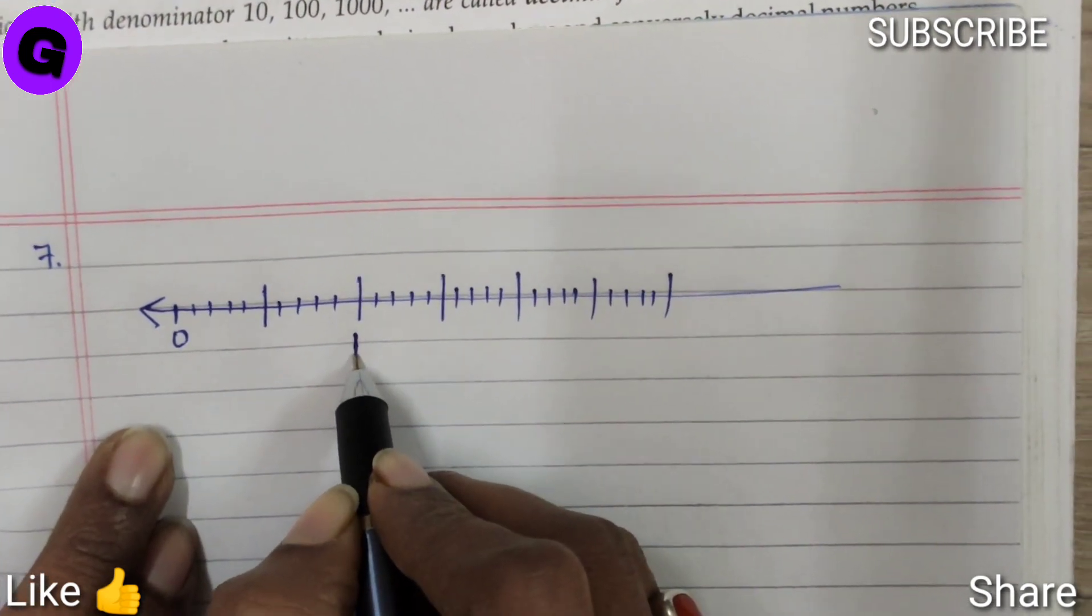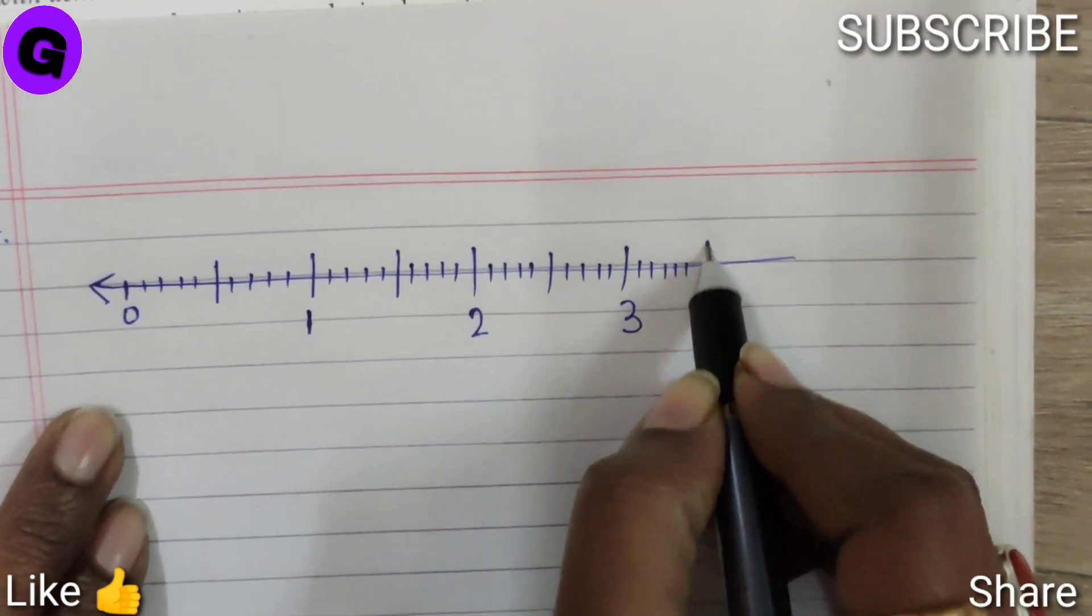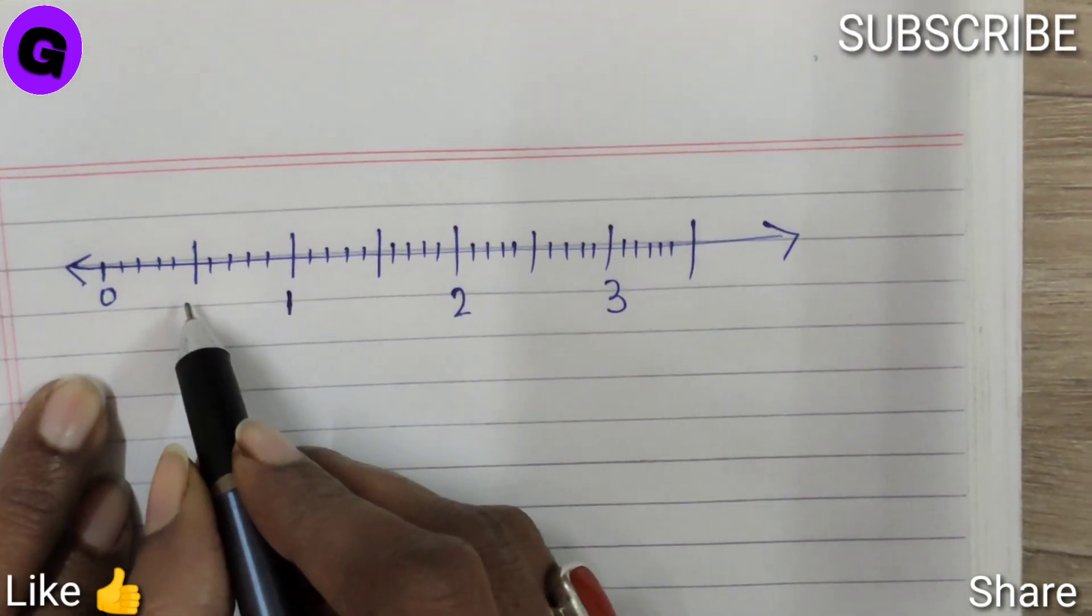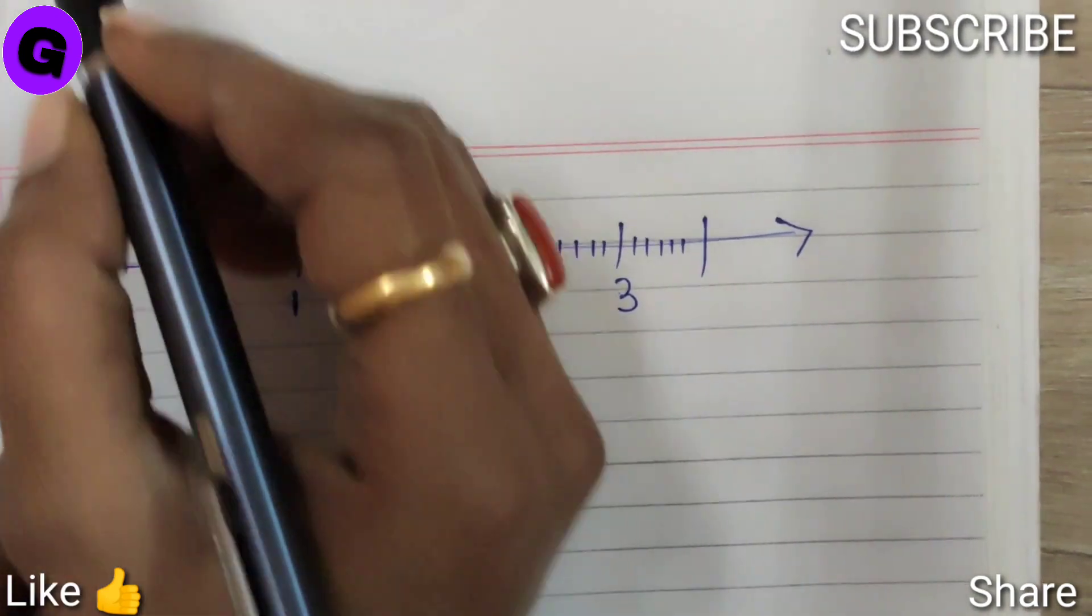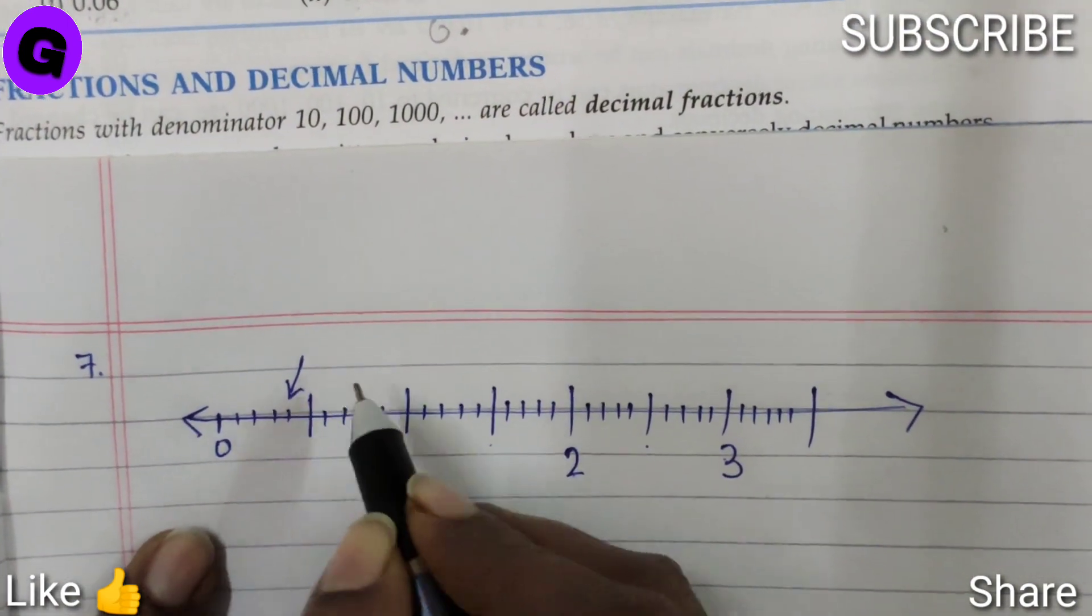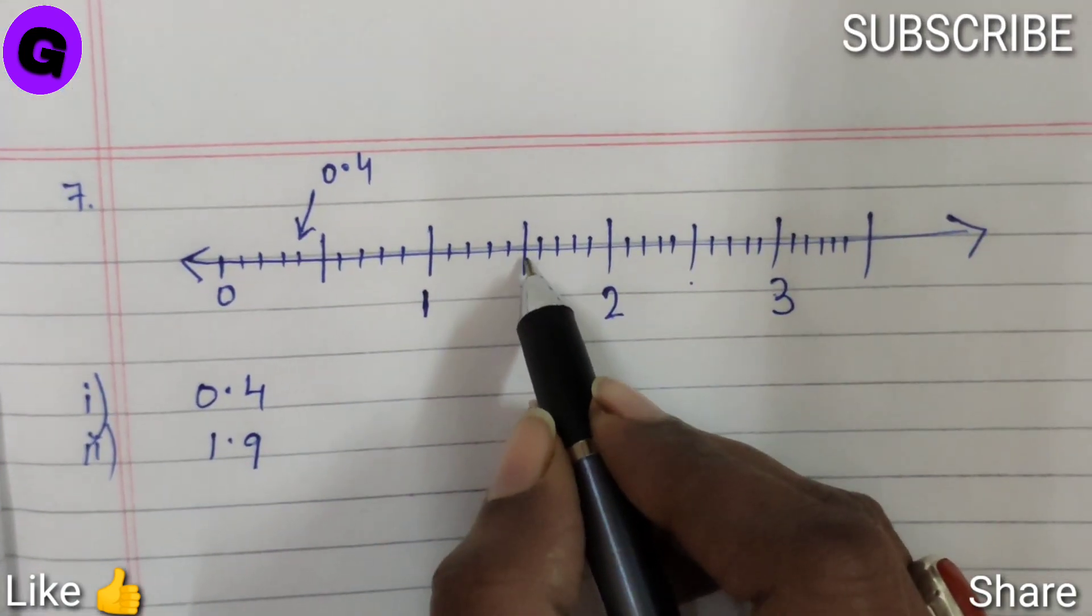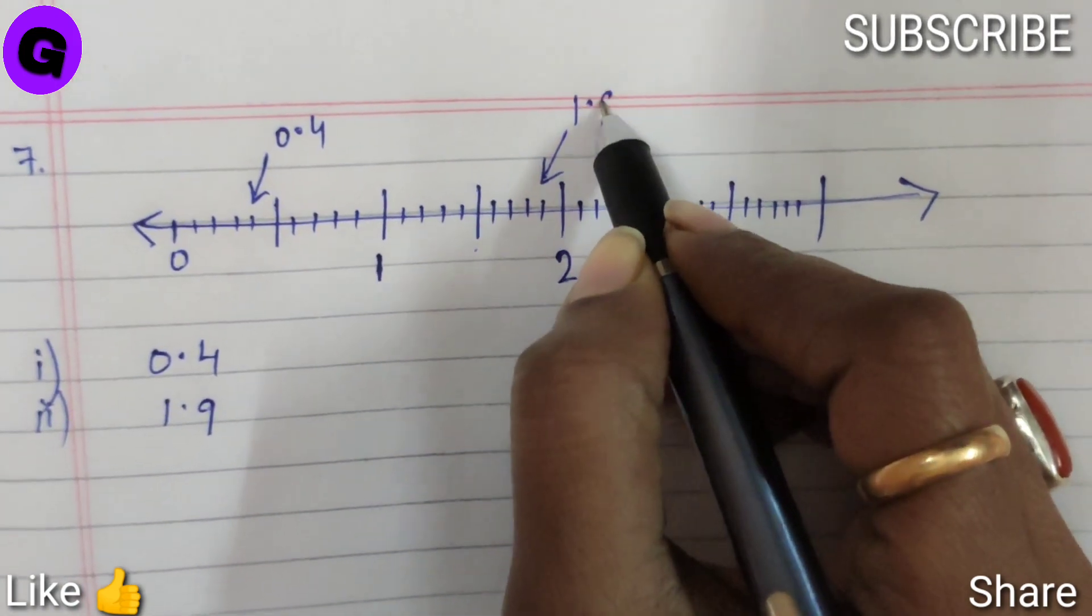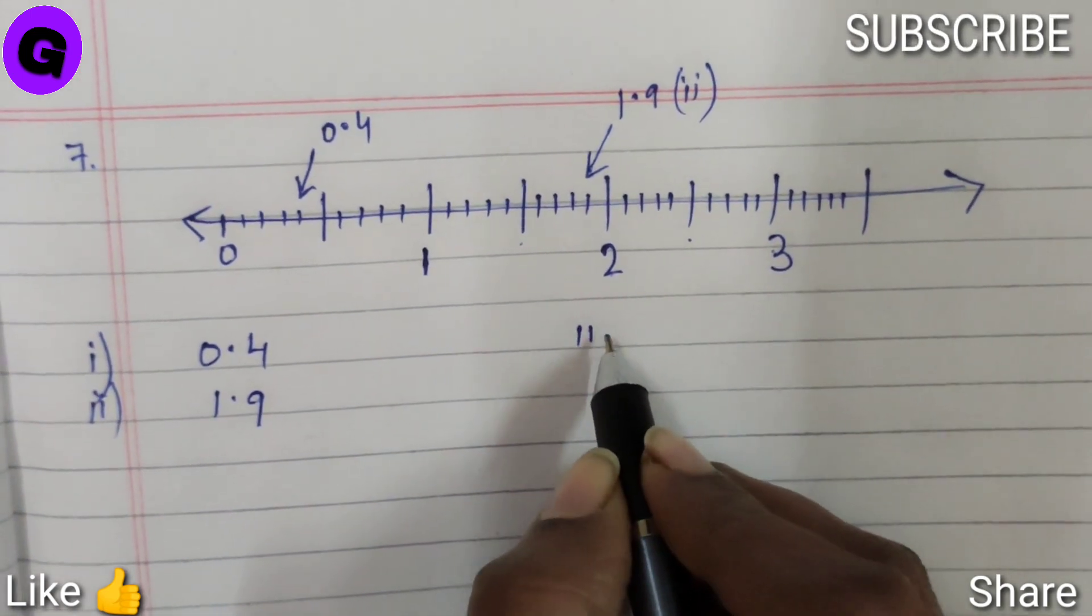So this is 1, 2, 3. And this goes on. So now this is 0.5, 1, 1.5, 2, 2.5, 3. Now we have to show 0.4, so this point is 0.4. 1.5, 6, 7, 8, 9, this is 1.9.